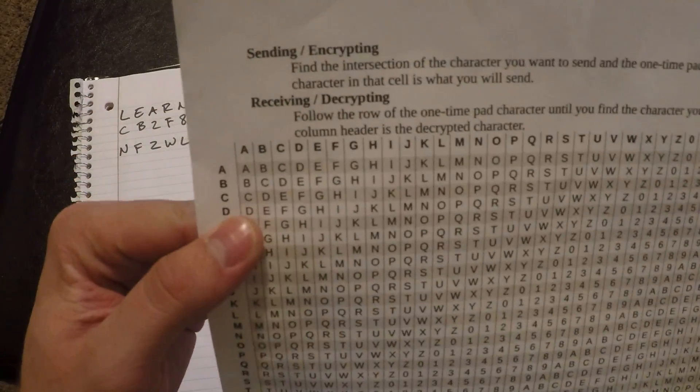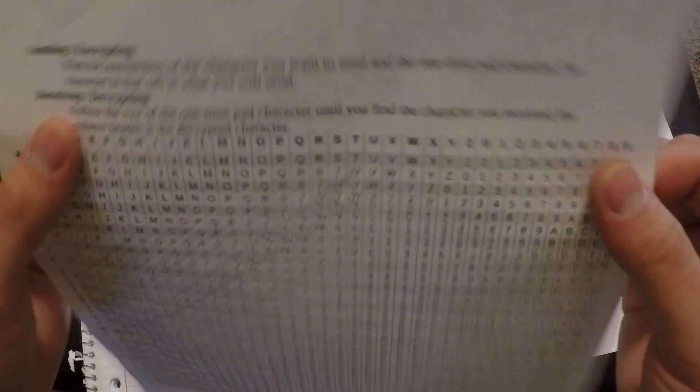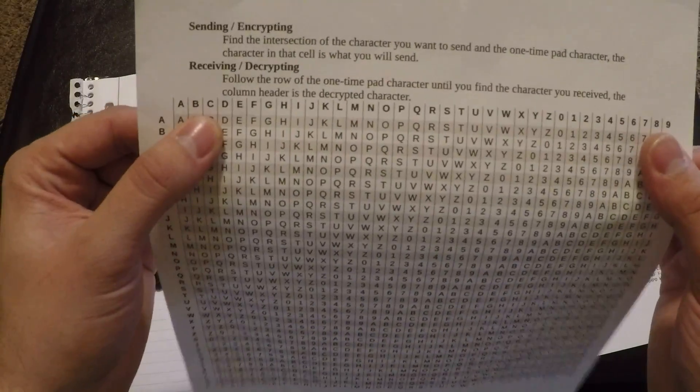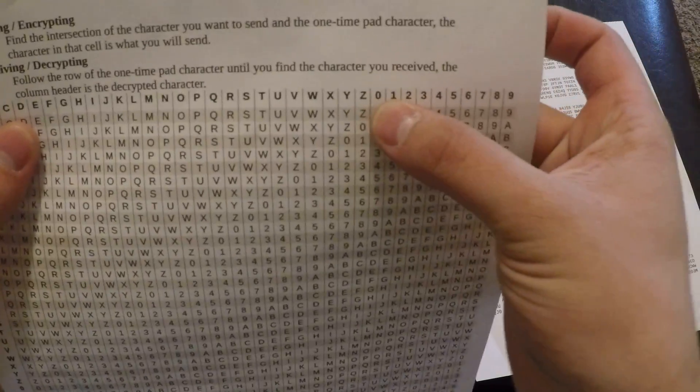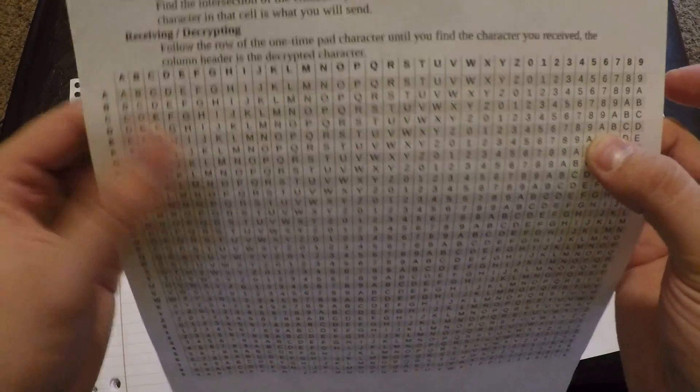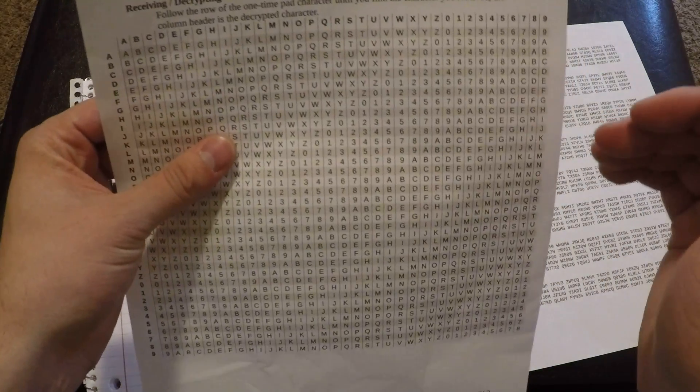Some of the more observant of you may have noticed that on this cheat sheet here, there is no space or special characters. So when you make your message, you want to make sure that it can be understood without spaces. These are the only letters you can send. A through Z, zero through nine. So tailor your message to that. Make sure it can be understood without a space in it.